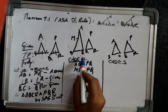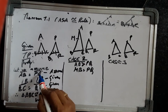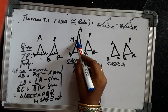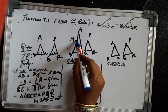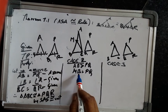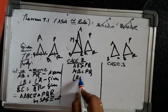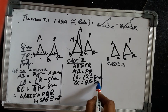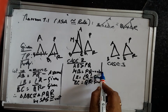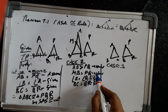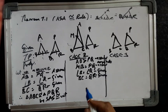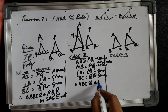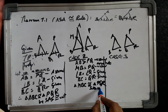We have assumed AB is greater than PQ for case 2. So we pick a point M between A and B where MB equals PQ. The rest remains the same: BC equals QR. These two are the given components; MB = PQ is arrived by construction. Therefore, triangle MBC is congruent to triangle PQR by SAS congruence criterion.